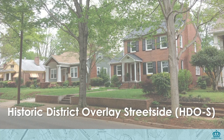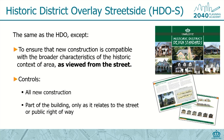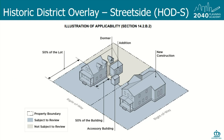Next, the Historic District Overlay Street Side — a new tool adopted as part of the UDO. None currently exist in Charlotte; it's a brand new tool available but not yet used. It's the same as a historic district in terms of the process, but it's limited to what is viewed from the street and the public right-of-way. It's about the character of the street and what's visible to the pedestrian from the sidewalk. The review is limited to the first 50% of the house and the first 50% of the lot. New construction on corner lots and mid-block vacant lots are completely reviewed, as are changes above the eaves of the roof or side additions visible from the public right-of-way.